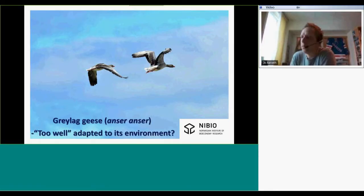Welcome everyone. My name is Jo Årset. I am situated in Tromsø in the north of Norway, and today's lecture is about the greylag geese, Latin name Anser anser. We call it too well adapted or too well adapted to its environment. After the lecture I have made a short Kahoot with five questions, so please have your mobile phones or iPads or PC ready on the internet.